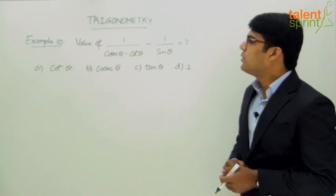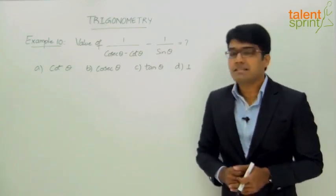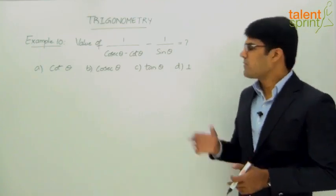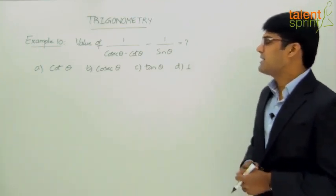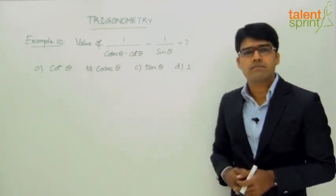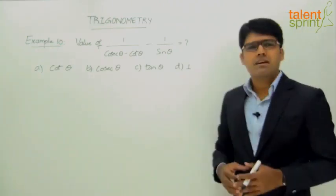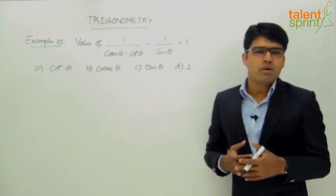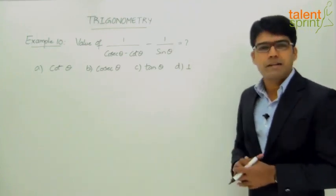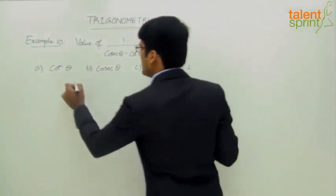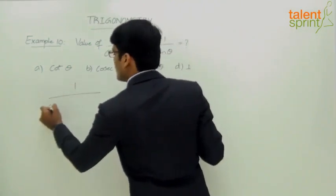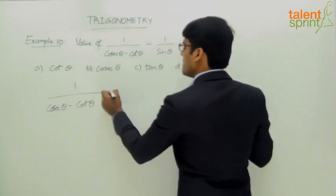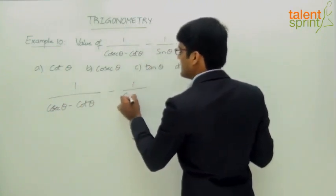We need to find the value of 1 by cosecant theta minus cot theta, minus 1 by sine theta. The answer options are cot theta, cosecant theta, tan theta, and 1. This is a simple question based on trigonometric identities, and we need to use known formulae to simplify the given expression.